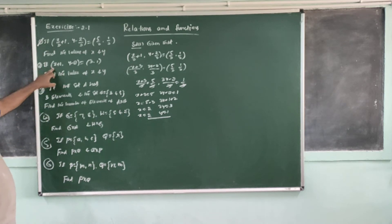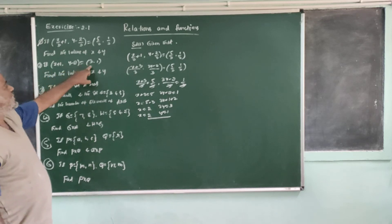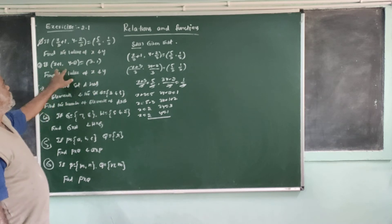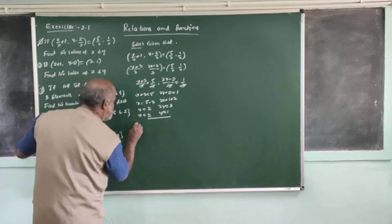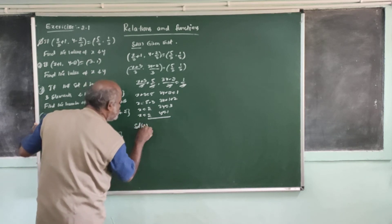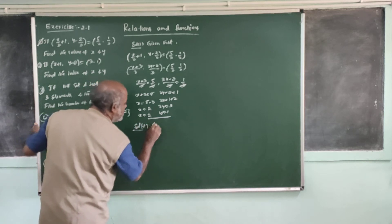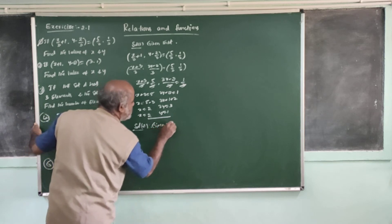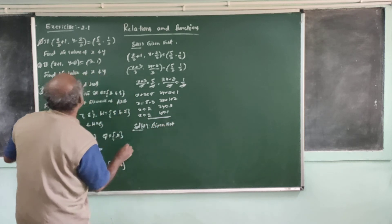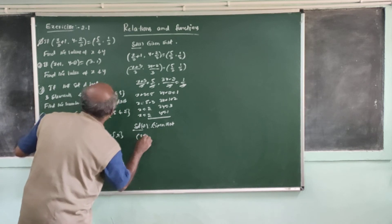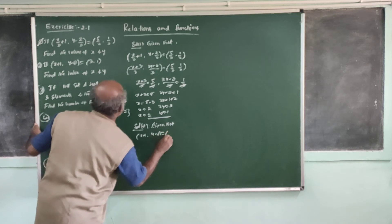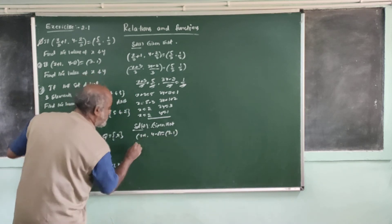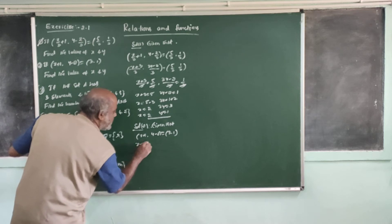If R and pair x plus 1, y minus 2, y minus 2 is equal to 3, 1. Find x and y. So this is the other way. R and pair are summed. So solution part given. Given, given, x plus 1, y minus 2 is equal to 3, 1. And pair x plus 1 is equal to 3. Correspondent elements are equal.